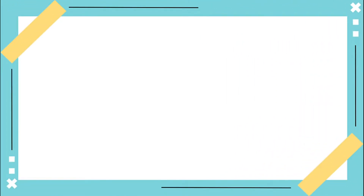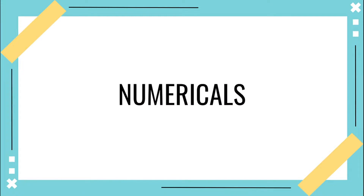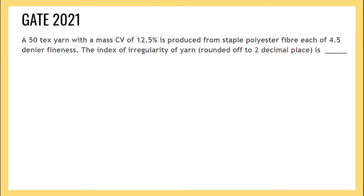Hello guys, welcome to TIPS, a platform for textile problems and solutions. Now we are going to learn about numericals on yarn irregularity. A 50 tex yarn with a CV of 12.5 percent is produced from staple polyester fiber.